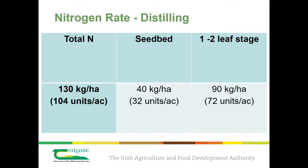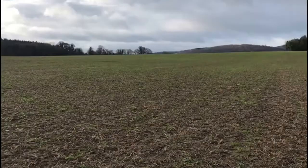For distilling crops, apply a total of 130 kilos per hectare or 104 units per acre, with 90 kilos per hectare or 72 units applied at the one to two leaf stage.